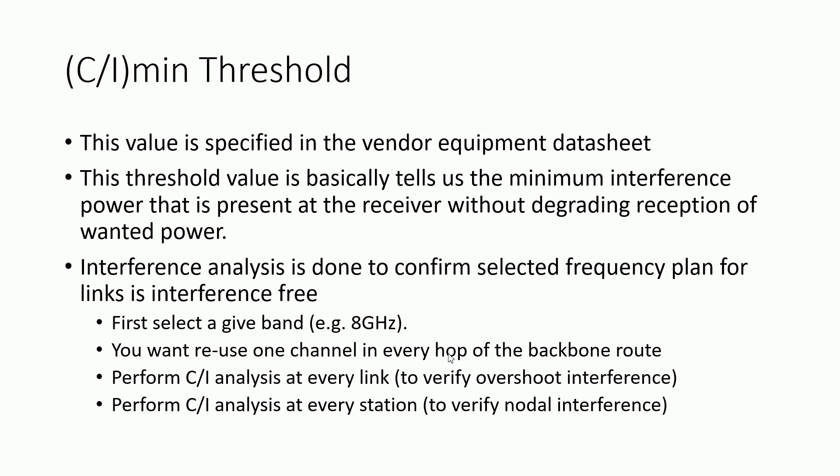The C/I minimum threshold is specified in the equipment data sheet when you are purchasing the equipment. You need to have it on hand when you are doing interference analysis. This threshold basically tells us the minimum interference power that can be tolerated at the receiver without degrading the performance of the reception.